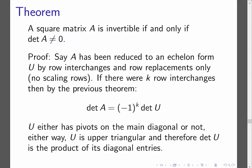Okay, so now, U either is going to have pivots on the main diagonal or not. Either way, U is upper triangular, and therefore the determinant of U is the product of its diagonal entries. Again, it's an echelon form, and echelon forms of square matrices are always upper triangular.